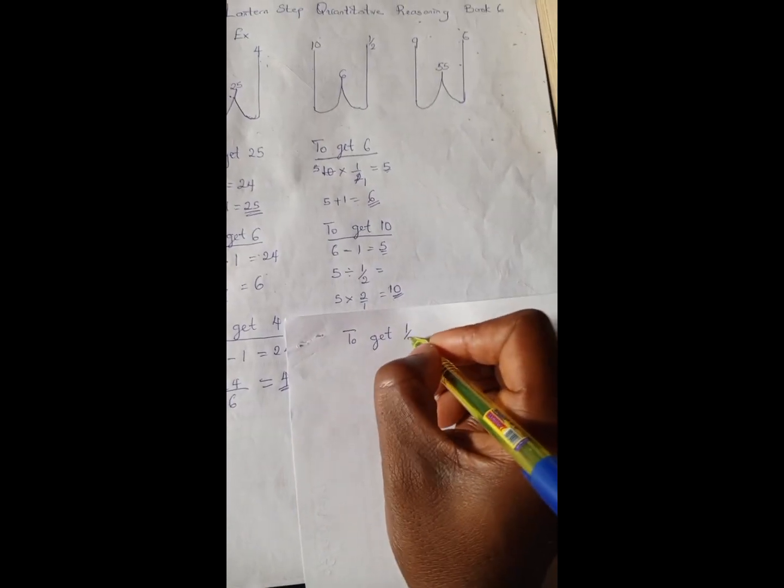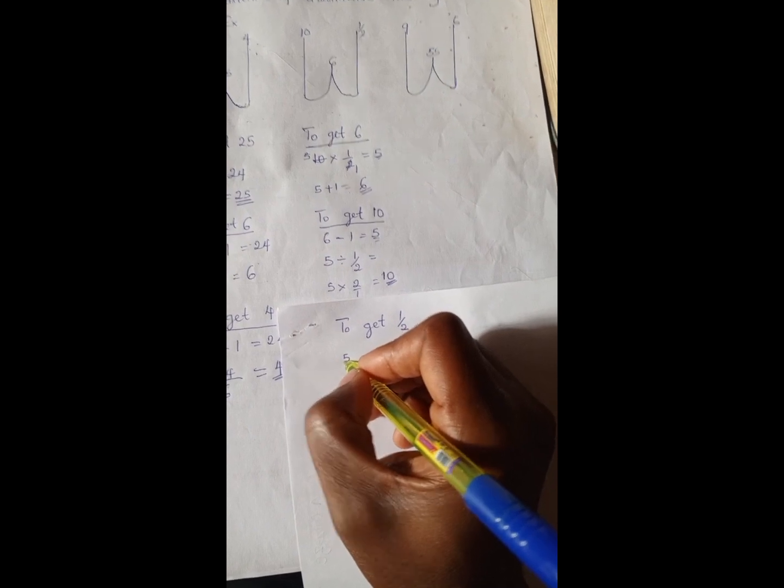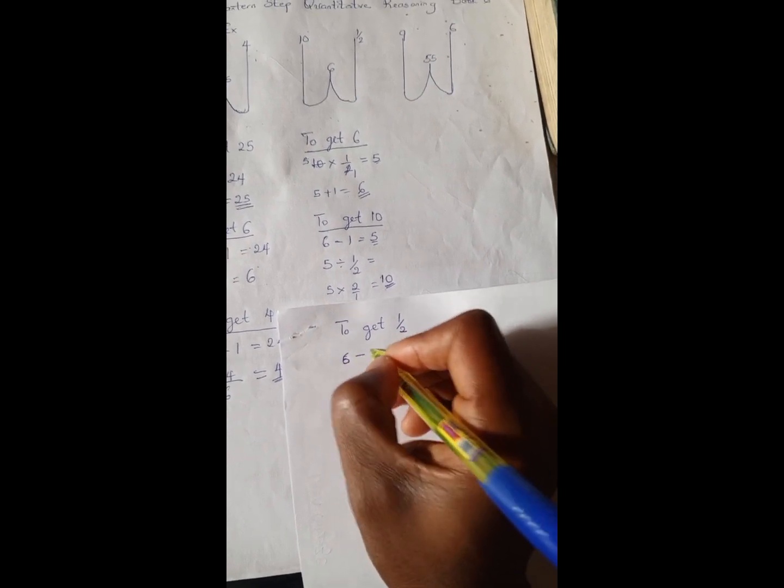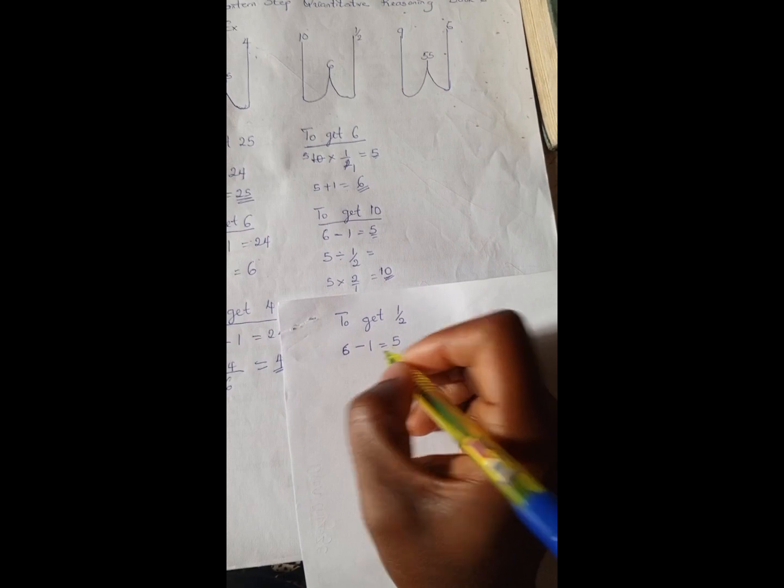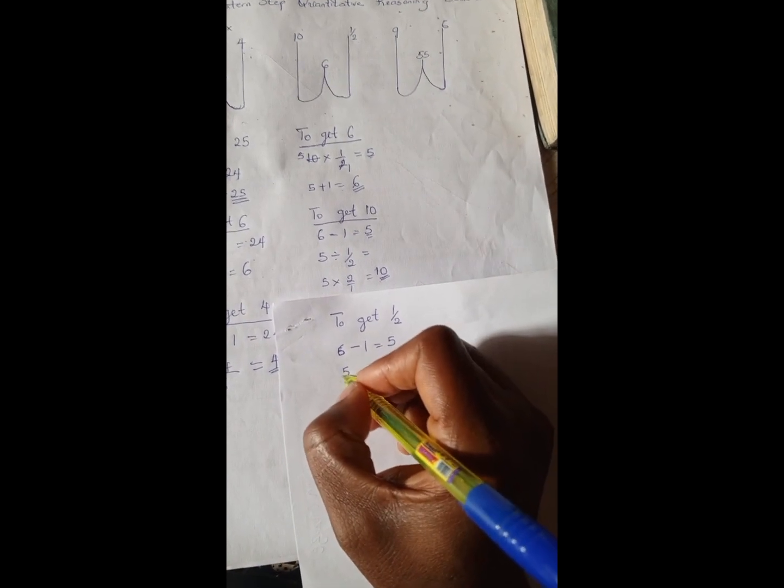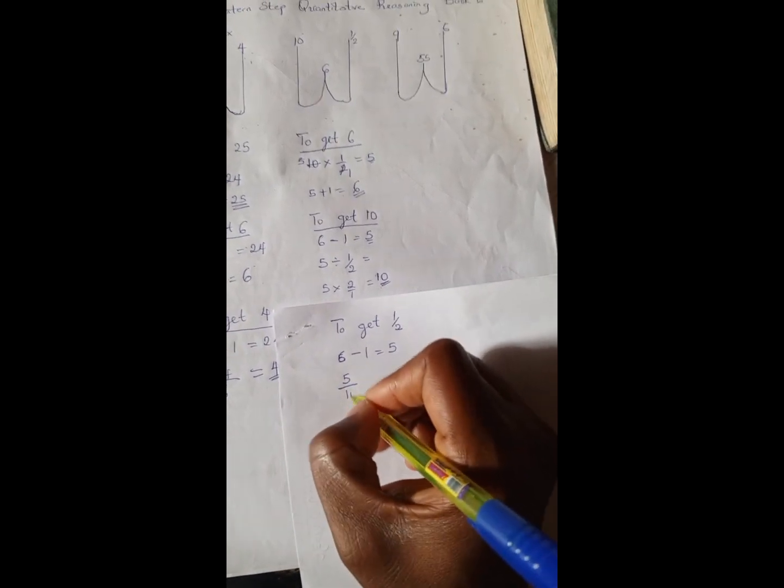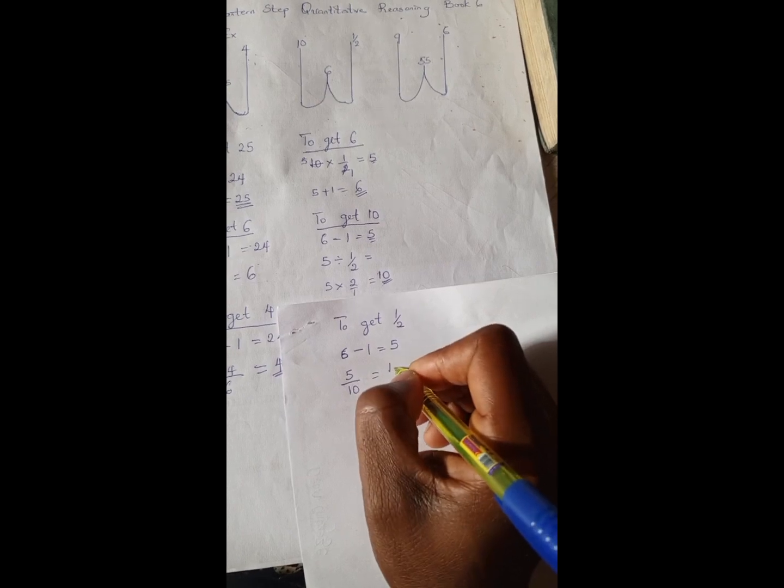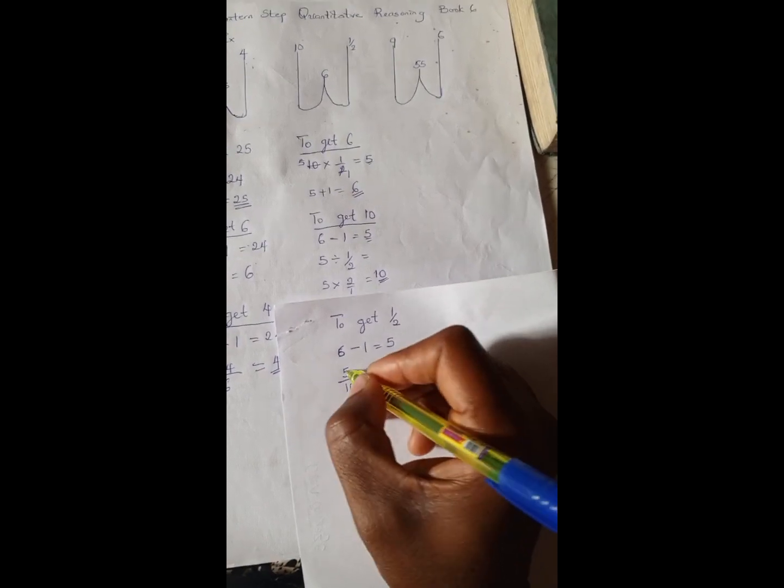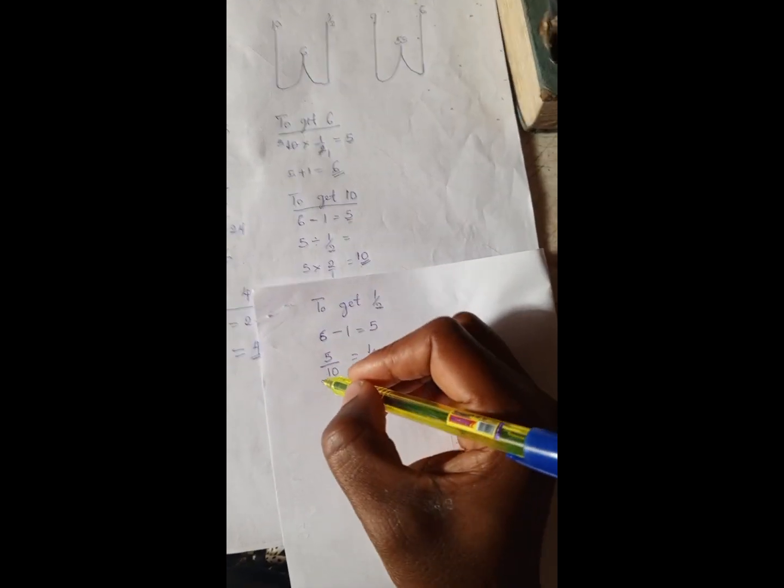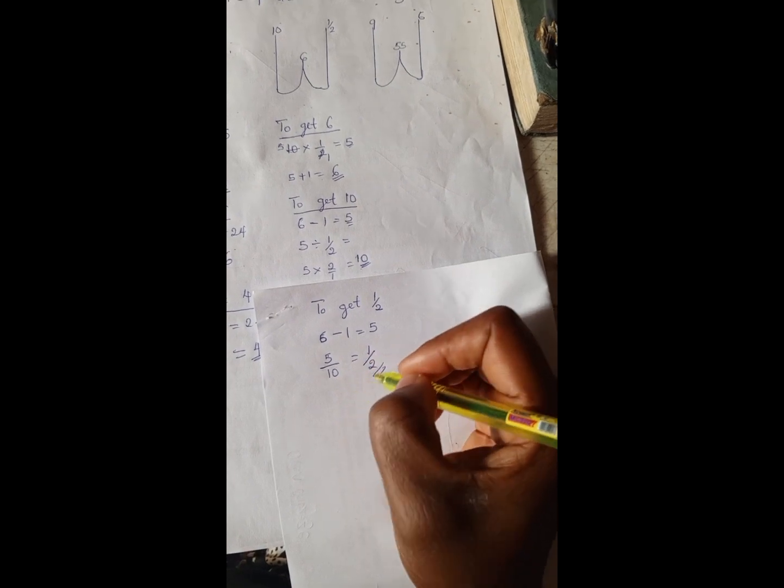To get 1/2, we have 6 minus 1, which is 5. So 5 divided by 10 is 1/2, because 5 can divide itself 1, and 5 divided by 10 is 2.